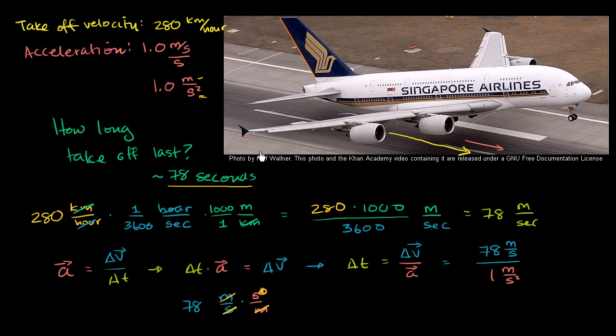we figured out that it would take an Airbus A380 about 78 seconds to take off. What I want to figure out in this video is given all of these numbers, how long of a runway does it need, which is a very important question if you want to build a runway that can at least allow an Airbus A380 to take off. You probably want it to be a little bit longer than that, just in case it takes a little bit longer than expected to take off. But what is the minimum length of the runway given these numbers?